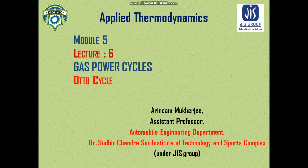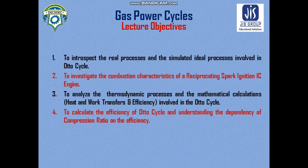Today we will start discussing from the practical point of view — the engines which are practically used to generate mechanical power. There are primarily two types of engines: the petrol engine and the diesel engine. The petrol engine ideally runs on an Otto cycle, so we will understand the real processes involved in a petrol engine and how they deviate from the ideal processes simulated in the Otto cycle.